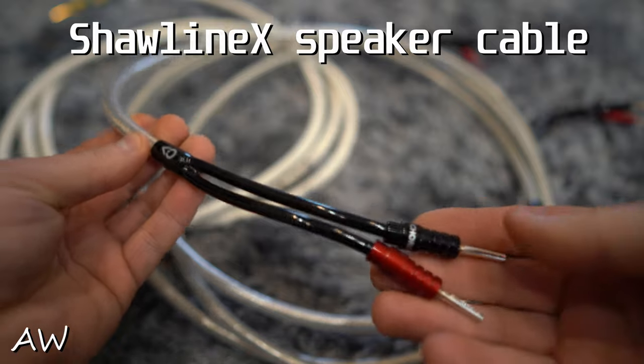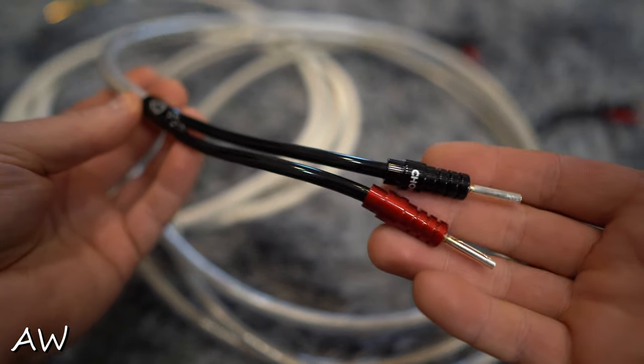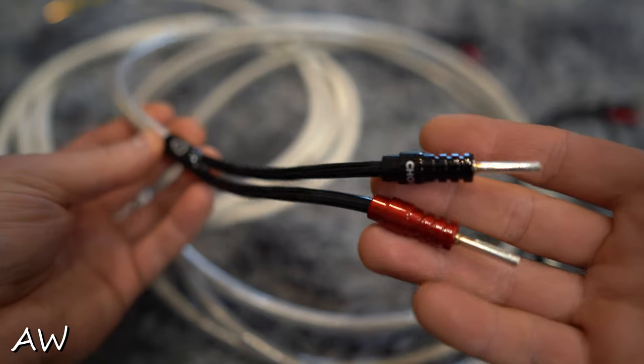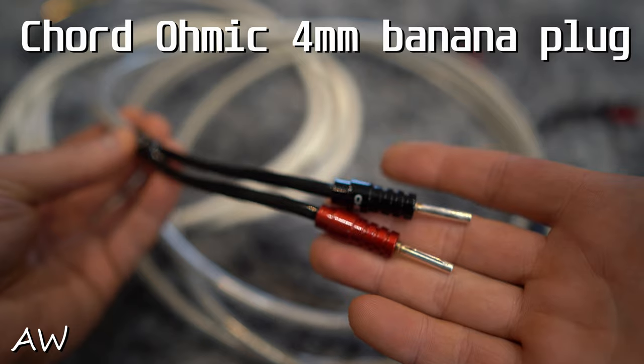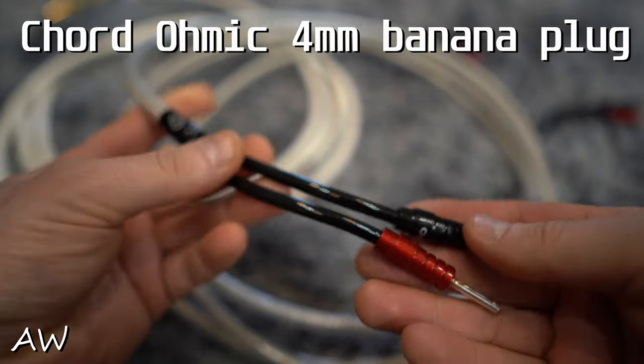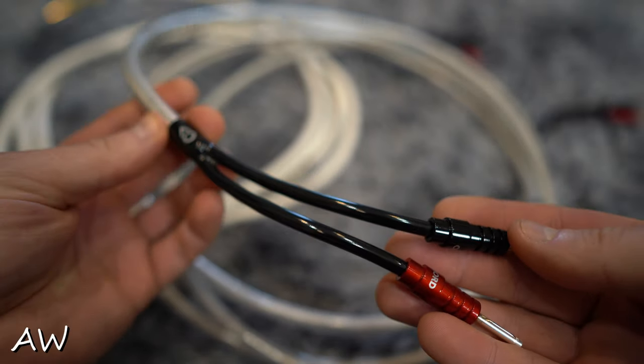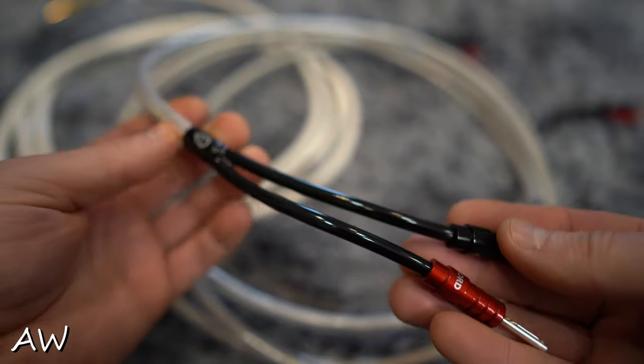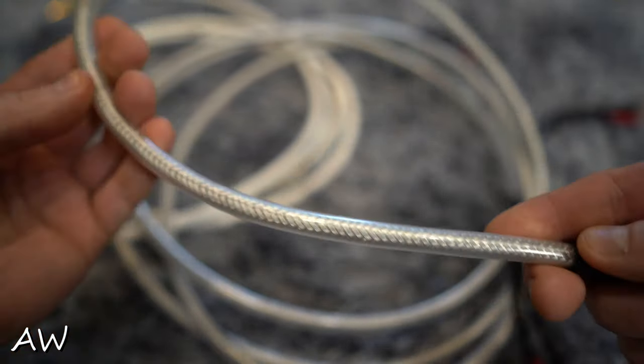This is Shonline X from Kord company. Very nice plugs, these are Ochmic plugs from Kord company as well, silver plated. We got also nice black trousers, the same from Kord company, and of course this speaker cable.